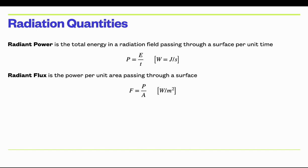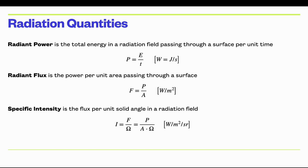Flux has units of watts per meter squared. The final quantity we will define is called specific intensity, and it's the quantity we will be following using the equation of transfer. Specific intensity is the flux per unit solid angle in a radiation field — you take the flux and divide it by the solid angle of the light source in the sky.